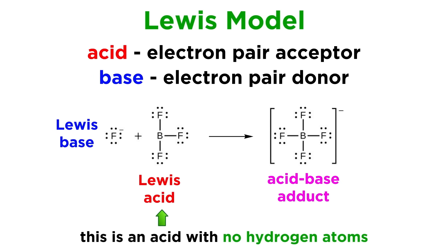Notice that, again, while ammonia works as a base in either model, this Lewis acid does not qualify as a Bronsted-Lowry acid, as it does not have any hydrogens with which to engage in proton transfer. Without any hydrogens it is incapable of transferring protons, and thus does not fit the Bronsted-Lowry definition.